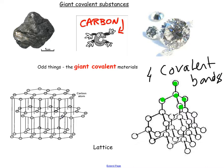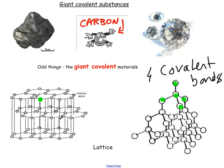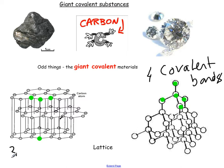If we look at graphite over here, if we count the bonds — there's one, two, and one right down here — so each carbon is bonded to three others. So diamond has four covalent bonds per carbon and graphite has three covalent bonds per carbon.